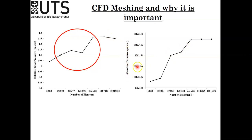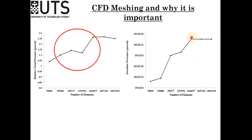We saw some small deviations, so we wanted to confirm it. I calculated two variables: the total relative pressure and the absolute pressure. For the same number of elements, we found the mesh is stable at this point. So we can say our mesh is stable from here, and we need to use this number of mesh for our simulation.